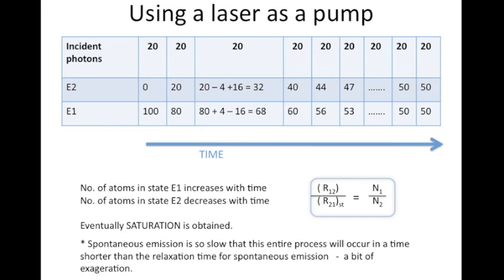Let's assume we can neglect spontaneous emission for now, and that the number of atoms initially in the excited state is 0 and in the ground state is 100. We use a laser as a pump sending 20 photons in a short time interval. In reality, only a fraction of these photons will interact with the atoms in the medium, and that fraction can be calculated using the cross-sections for the various types of interactions.